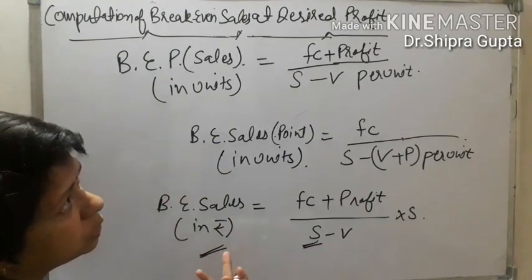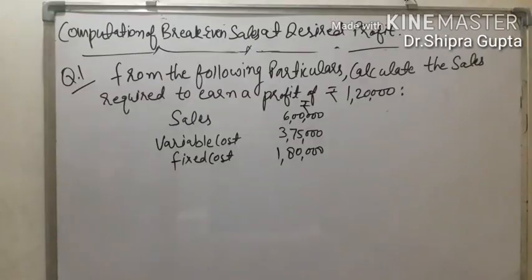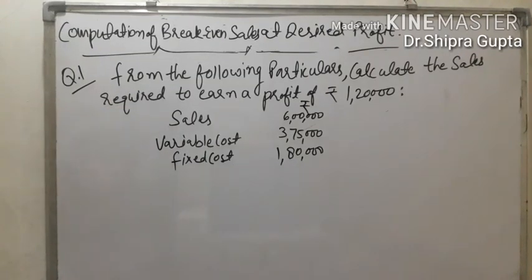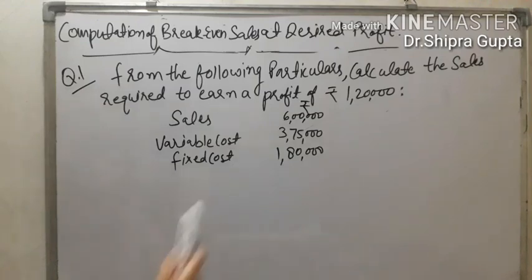Now let's apply this with an example. This question is on computation of break-even sales at desired profit. The question: from the following particulars, calculate the sales required to earn a desired profit of rupees 1,20,000. Sales are 6,00,000 rupees, variable cost is 3,75,000, and fixed cost is 1,80,000 rupees.